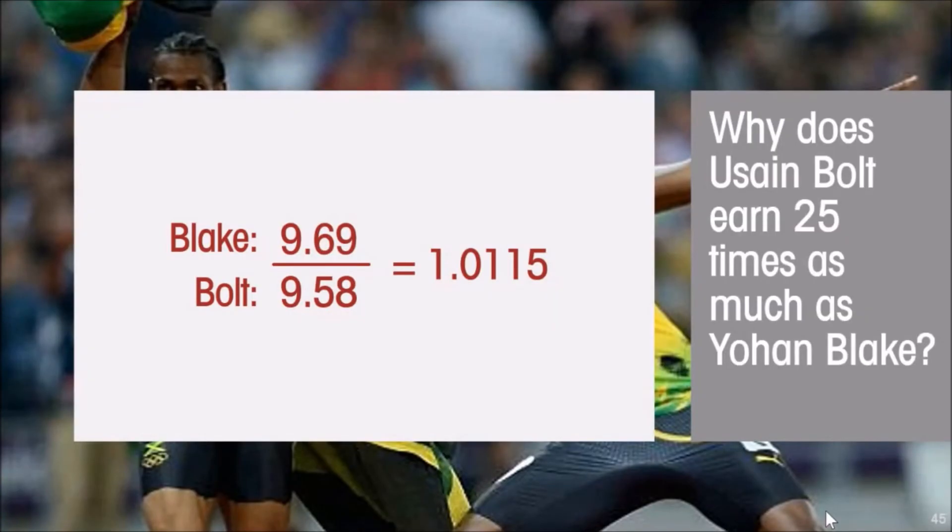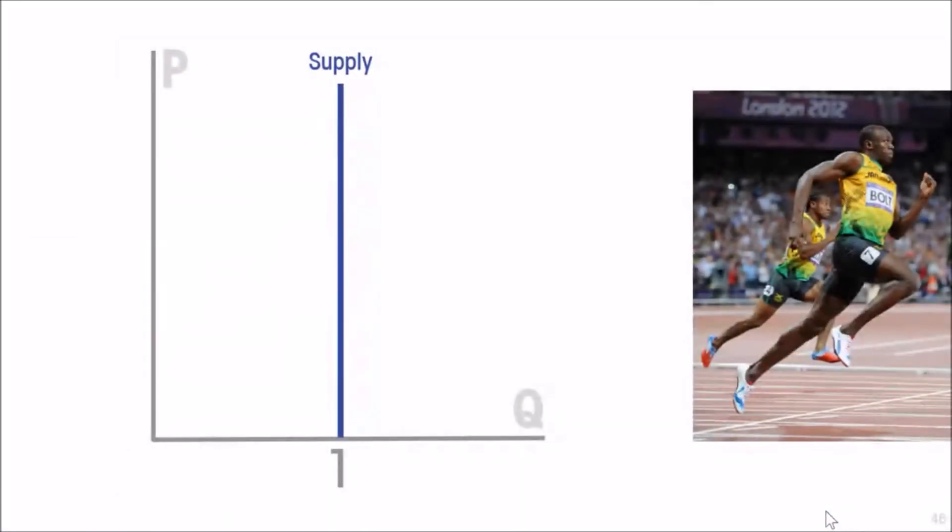How does that translate not to a 1% difference in Bolt's earning ability, but to a 25 times difference? Well, the answer is that Usain Bolt is the Mona Lisa. How many fastest men in the world are there? Well, there can only be one.